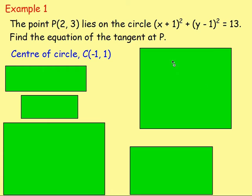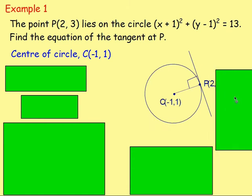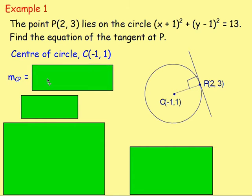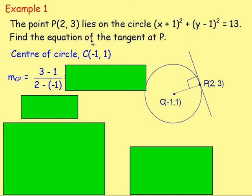Well done if you got that. So you've got the centre of the circle and you know that point. You want the equation of the tangent at P. To do that, you know these two points — the centre and the point — so the first thing is to work out the gradient of the radius. Using y2 minus y1 over x2 minus x1, you'd have 3 minus 1 over 2 minus negative 1, which gives you 2 over 3. So that is the gradient of the radius.